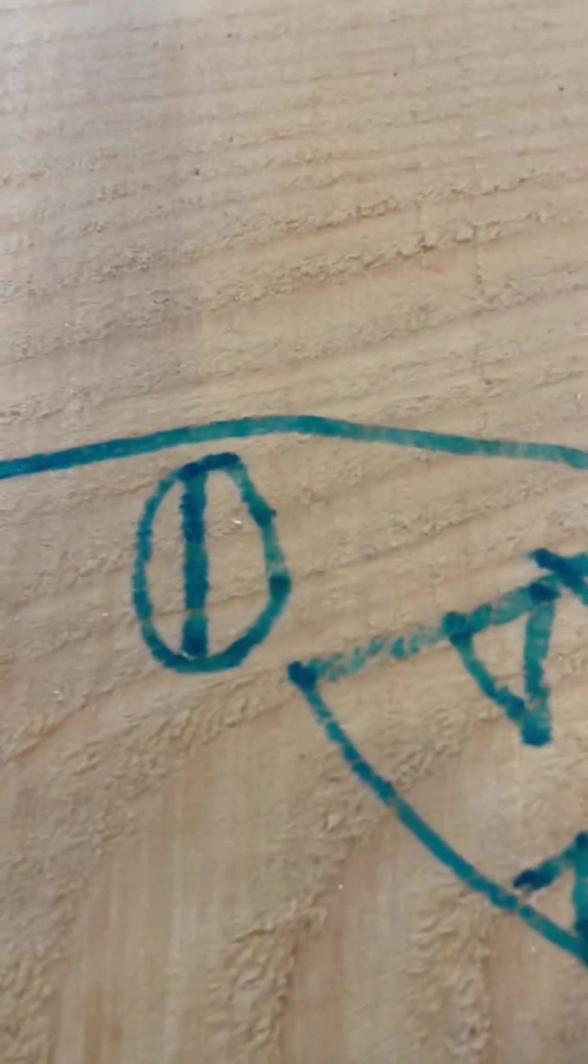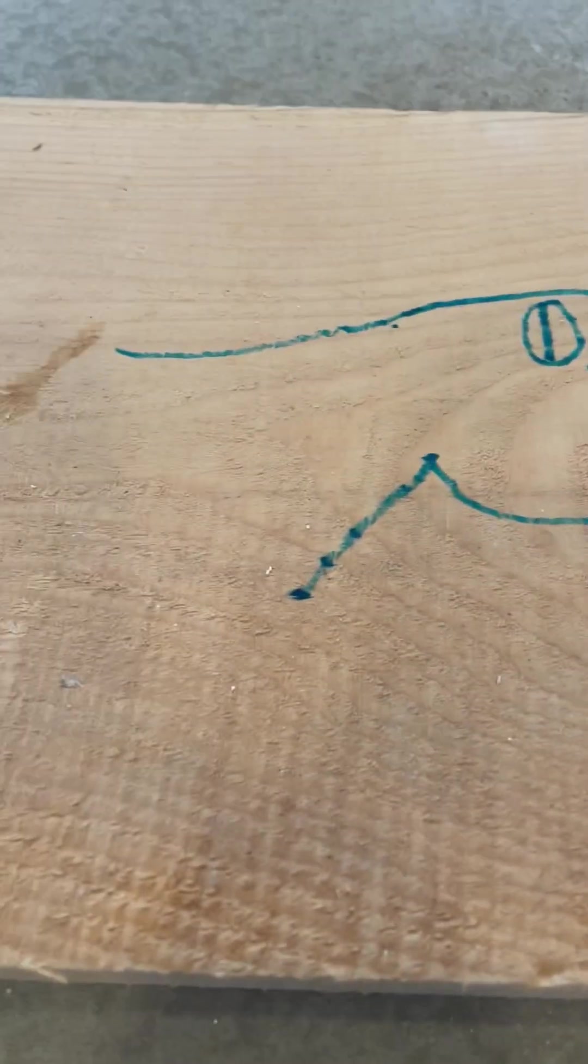And then you make a circle right there and I put a line in it to make it creepy. And then you're going to draw a line going down and then a line more forward and then you can make some spikes if you want to.